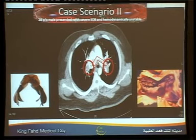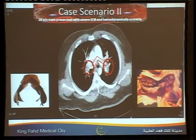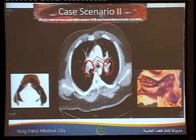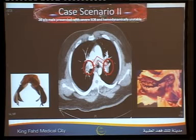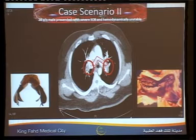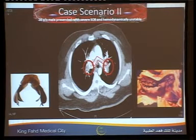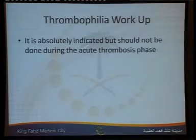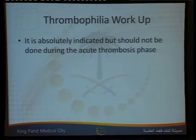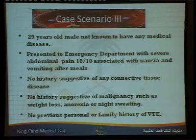Second case: a 28-year-old male, admitted about five days ago, presenting with severe shortness of breath and hemodynamic instability — massive, life-threatening pulmonary embolism. This is the type of fatal PE that causes death before reaching the ER. The patient received thrombolytic therapy. Thrombophilia testing is indicated but should not be done at this stage, during the acute thrombotic phase.